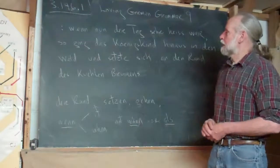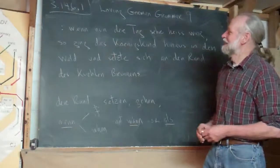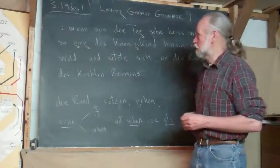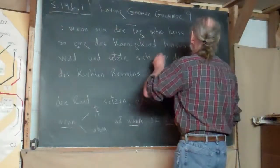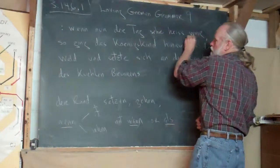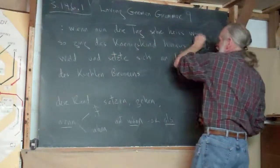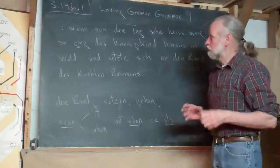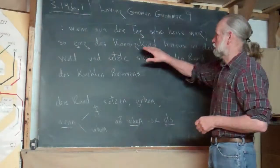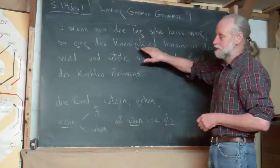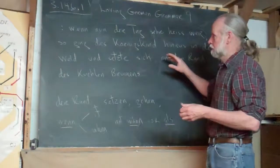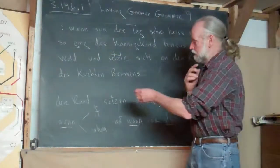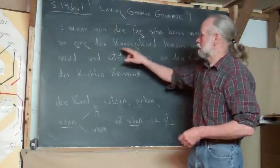This is fun. 'Wenn' is a subordinating conjunction, and why this is structured the way it is — with the verb at the end — is because it's a subordinate clause. The main clause here is that the king's child went. If you were diagramming it, 'the king's child went' is the main clause.